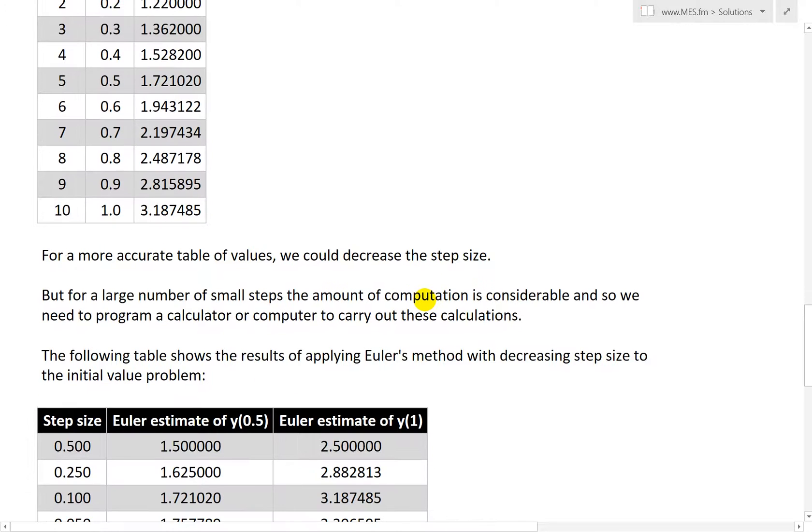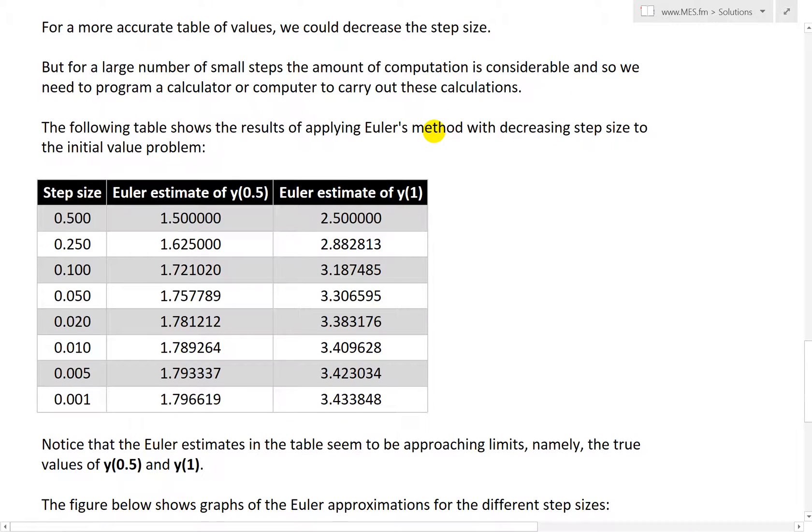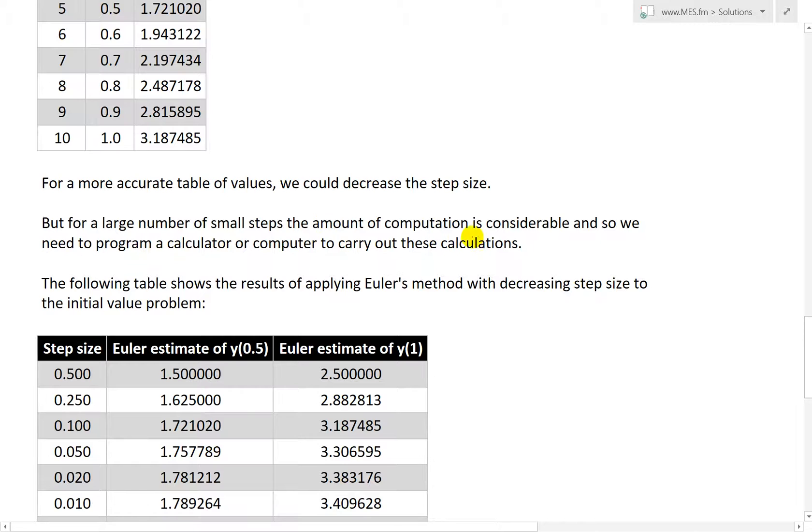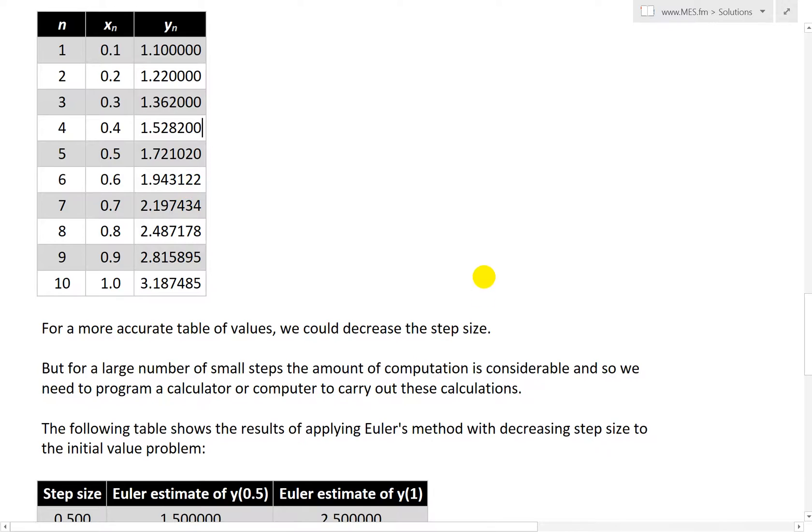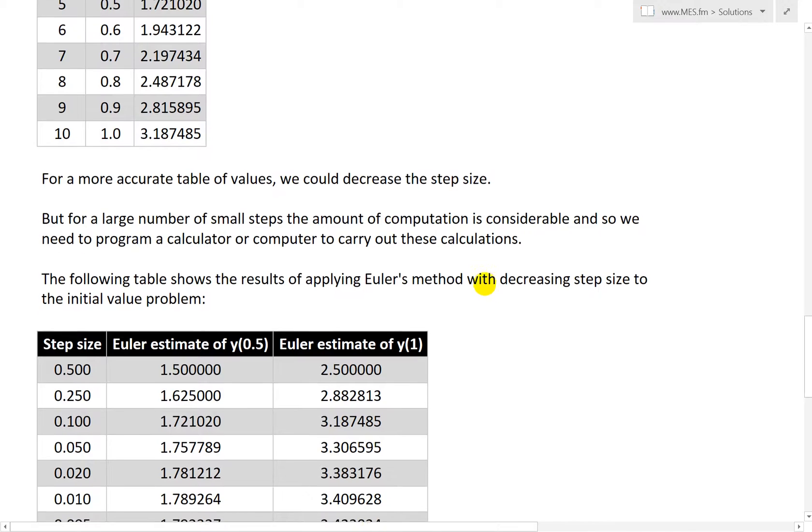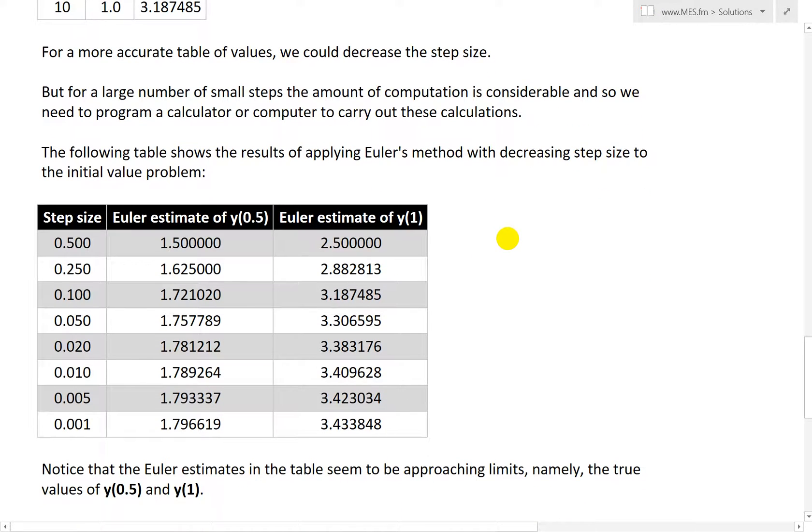But for a more accurate table of values, we could decrease the step size further. So instead of dealing 0.1, we could deal with stuff like this, 0.001. But for a large number of steps, the amount of computation is considerable. So we need to program a calculator or a computer to carry out these calculations. And here, I did this for, I used the spreadsheet for these as well, just because I didn't want to calculate this out by hand anymore. So if we were to deal with even finer step sizes like this, we would get more accurate results.